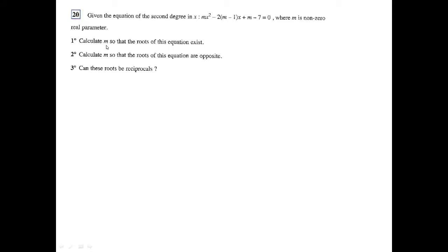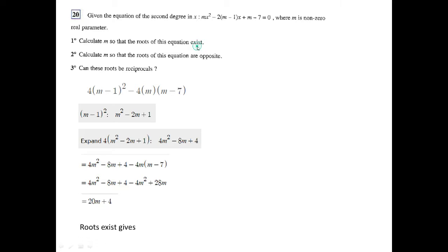If he asked you to calculate M, it means to find the values of M that satisfy this condition. The roots exist, meaning Delta is positive. Just write Delta, calculate Delta, and say Delta is greater or equal to zero, so we can get M greater or equal to minus 5. If he asked about another condition, the roots are opposite, just write the sum equal to zero. If the roots are reciprocal, the product equals one. You can just memorize it easily.